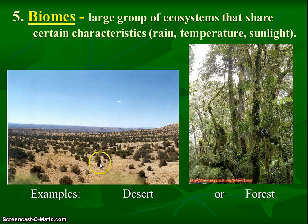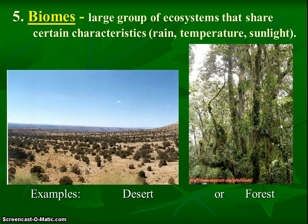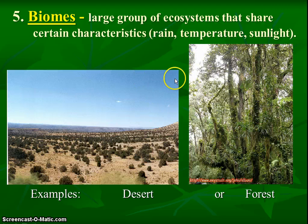This biome is called desert. Similarly, we have other biomes that have more rain, a little less sunlight, and more moderate temperature — that would give us a forest. We can categorize these things of similar abiotic and biotic characteristics and call it a biome.